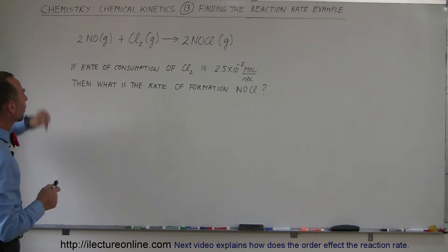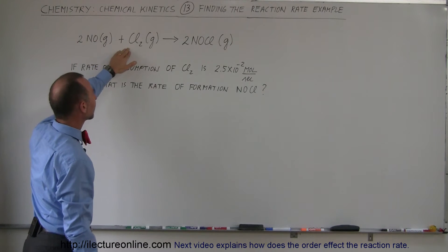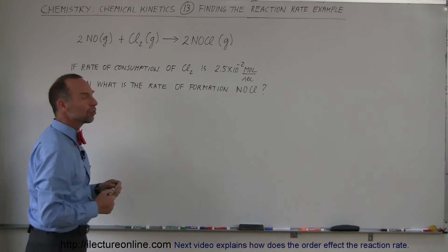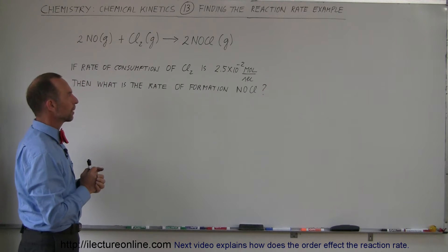Now what if we have this equation right here? We have nitrogen monoxide and chlorine gas forming what we call nitrosyl chloride, strange name but that's what it is, NOCl. They're all gases.